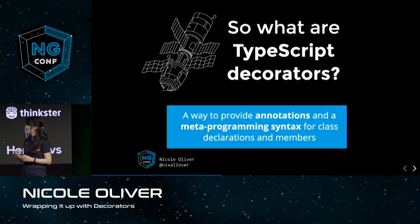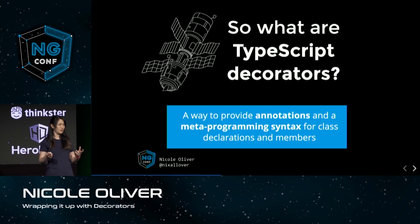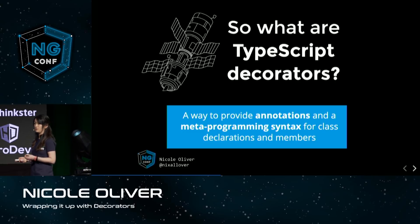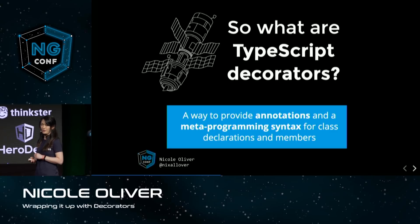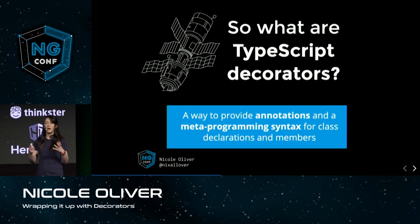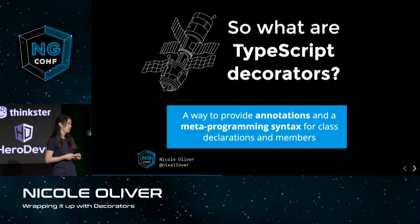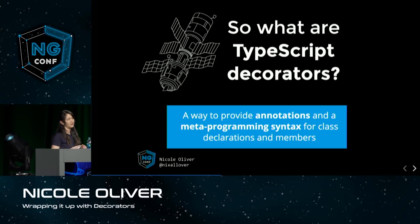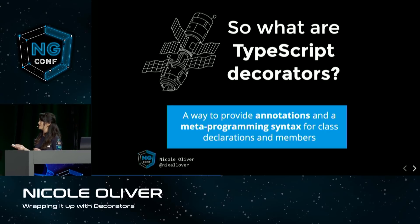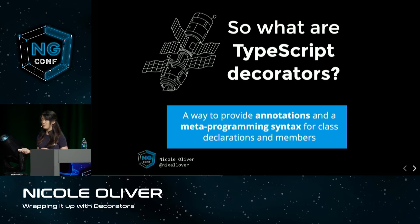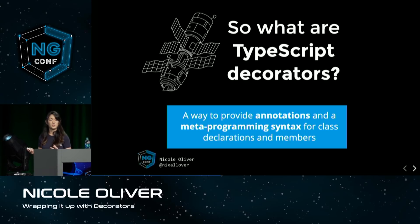Getting more abstract, decorators are a way to provide annotations and a metaprogramming syntax to classes and class members — a definition straight out of the TypeScript documentation. What it's really getting at is that decorators are a way to describe our data. Think back to the component decorator: we were describing our component to Angular — a very declarative approach to programming. If you know C# data annotations or Java annotations, those are similar — ways to assert type information, and that is also a valid use of decorators.